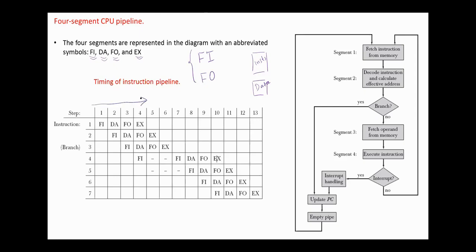The time on the horizontal axis is divided into steps of equal duration. With no branch instructions, each segment operates on different instructions. At step four: instruction one is being executed, the operand for instruction two is being fetched in segment FO, instruction three is being decoded in segment DA, and instruction four is being fetched from memory in the FI segment.